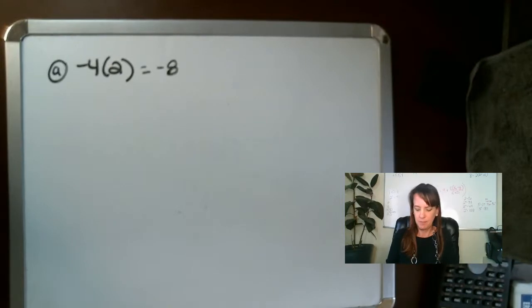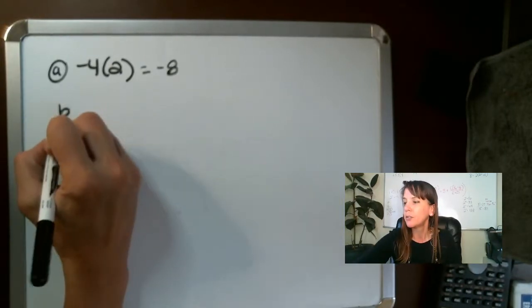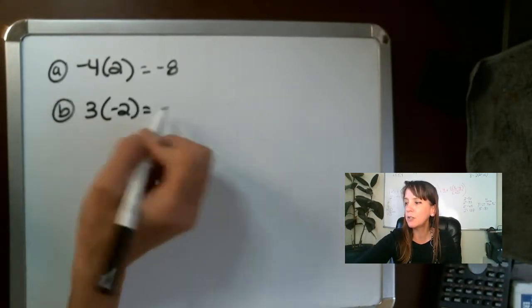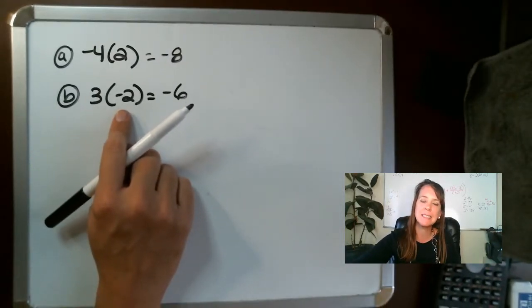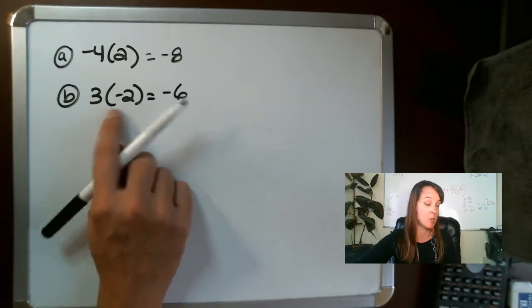All right, so that's negative eight. For B, we have three times negative two. That gives us negative six. And guys, remember, parentheses sometimes just indicate multiplication like they do here.